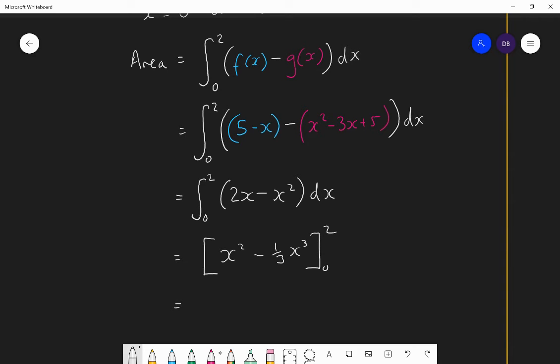And now I evaluate the limits. So I substitute the limits in. So I substitute 2 in. I get 2 squared, which is 4, minus a third of 8, which is a third of 2 cubed. So minus 8 thirds. Take away what I get when I substitute 0 in, which would be 0 minus 0. And that then gives me 4 take away 8 thirds, which is simply 4 thirds units squared. So that there is the area that we wanted to find, the area enclosed between the two functions.